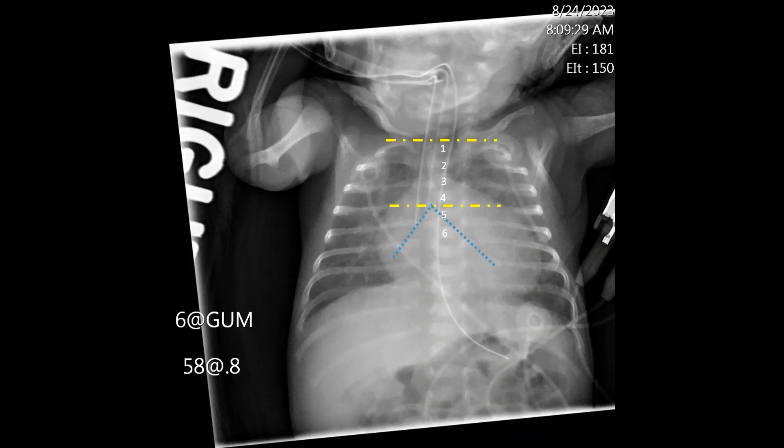Right main stem bronchus intubation is one of the most common locations for a deep endotracheal tube to extend into. When the right main stem bronchus is intubated, you can cause collapse of the left lung, and if it's deep enough, you can also sometimes see right upper lobe collapse.